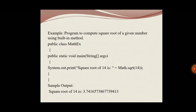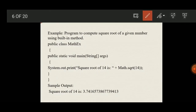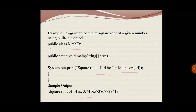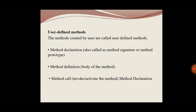Let us see a simple program using a built-in method. This program is used to find the square root of a value. The class is MathX, and to find the square root of 14, we are using Math.sqrt(14). The output will be 3.74. The same program is compiled and executed, and you will be getting that output.